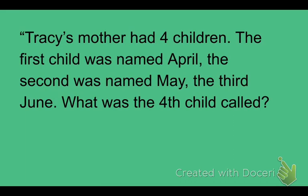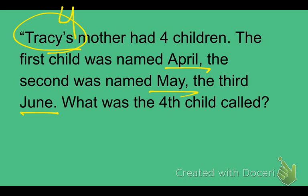Here's a riddle: Tracy's mother had four children. The first was named April, the second May, the third June. What was her fourth child called? The answer is Tracy — because we're talking about Tracy's mom, Tracy is the fourth child.